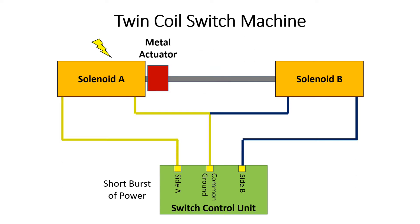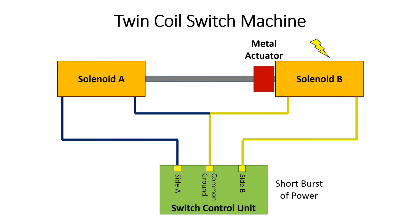So let's say you want to throw this turnout. You use your switch control and send a short burst of power through side A. You activate solenoid A — it becomes powered, turns into an electromagnet, and pulls the metal actuator towards itself. This moves the points on the turnout and sets it for a certain direction. If you want to throw the switch the other direction, you run power through side B, which turns on solenoid B, pulls the metal actuator towards side B, and moves the points to the opposite direction.